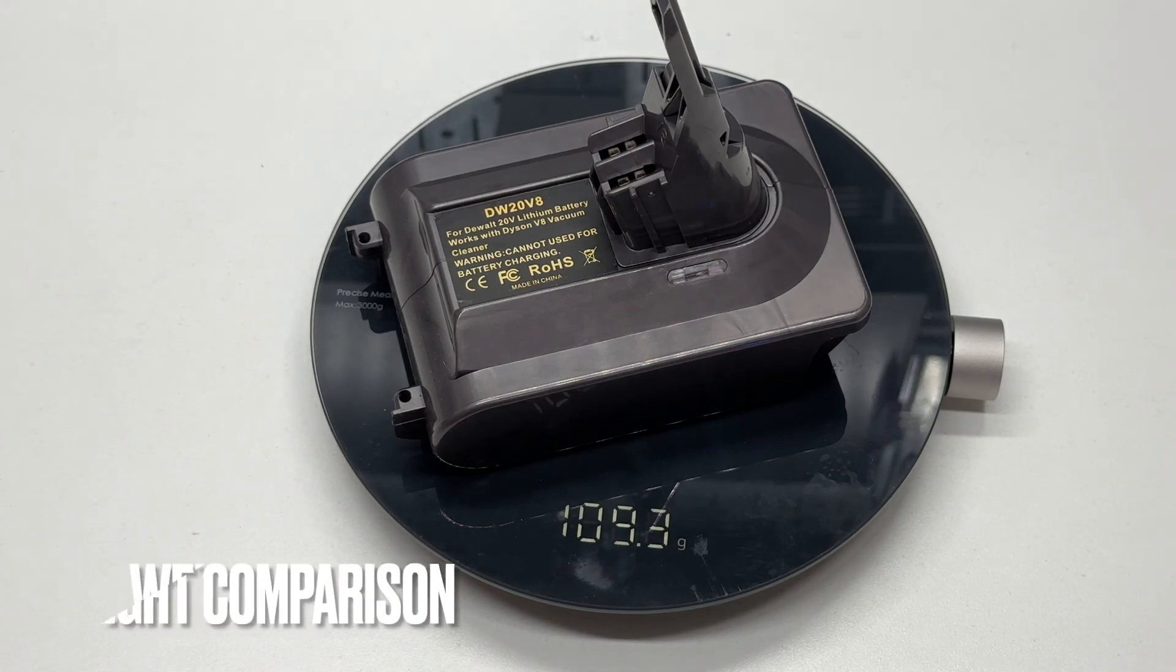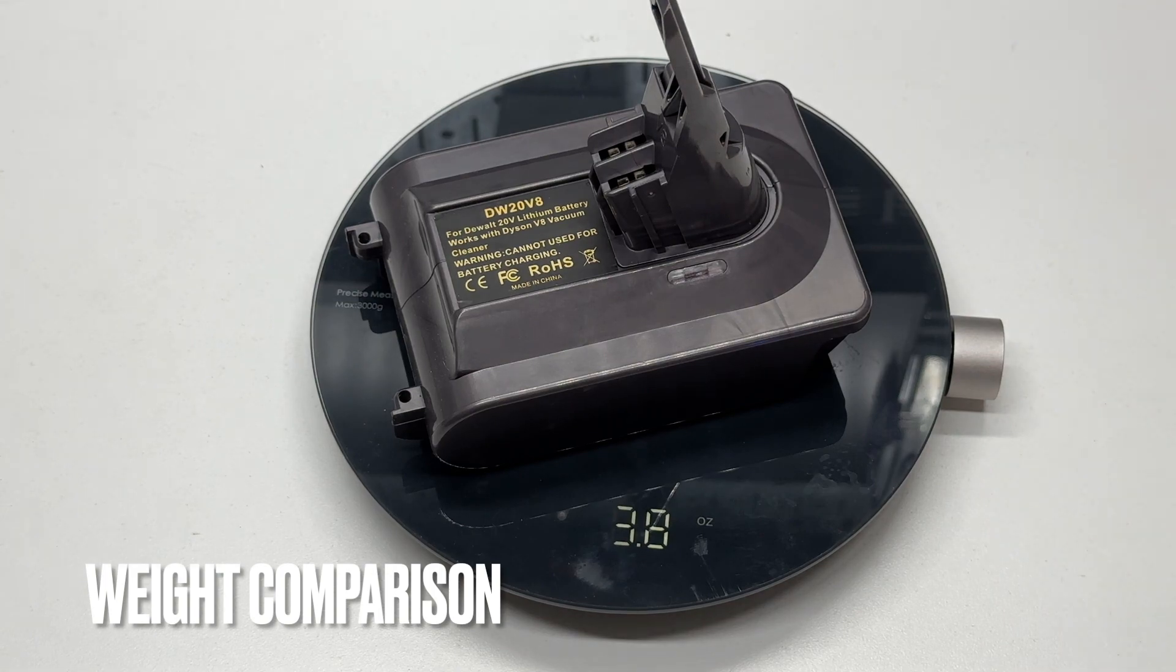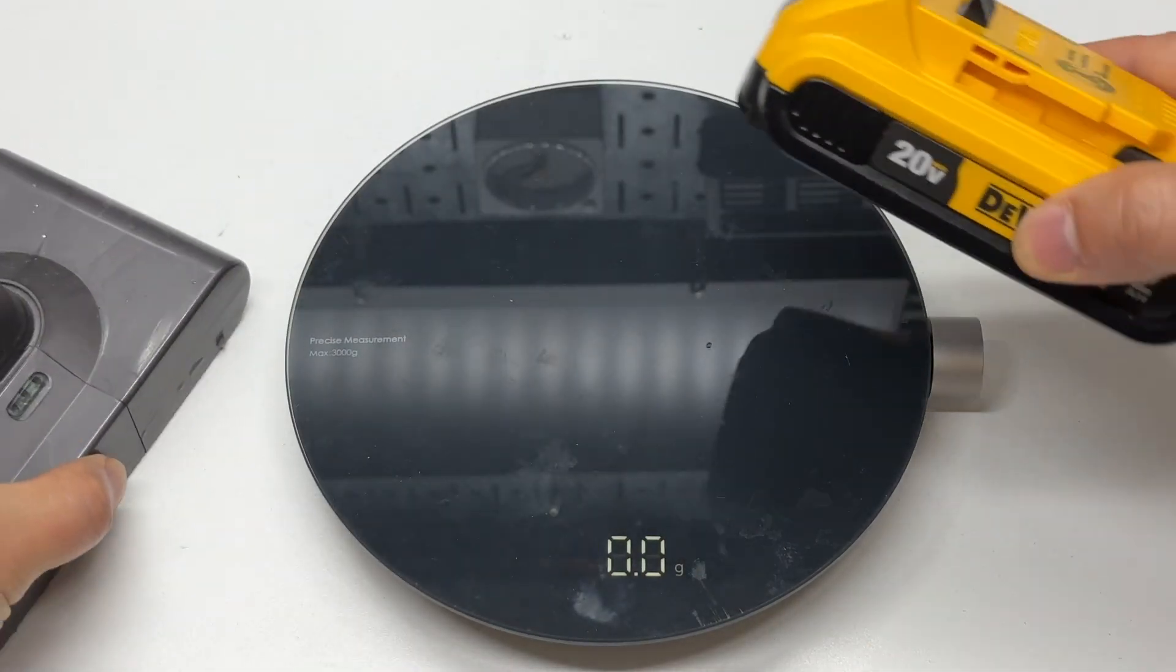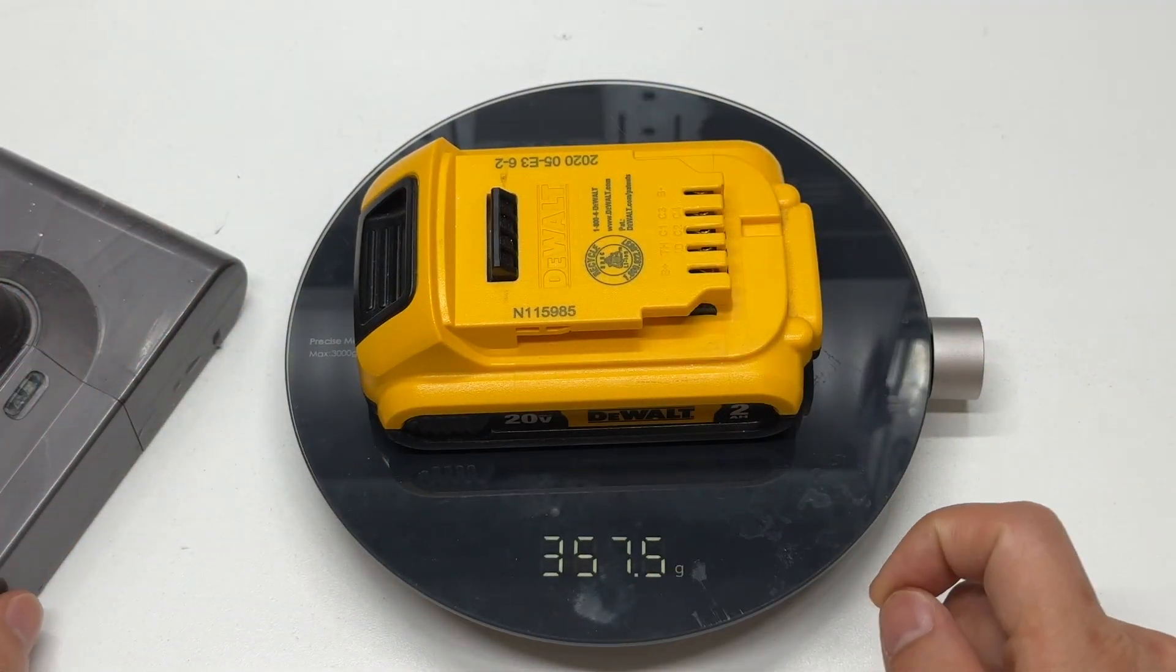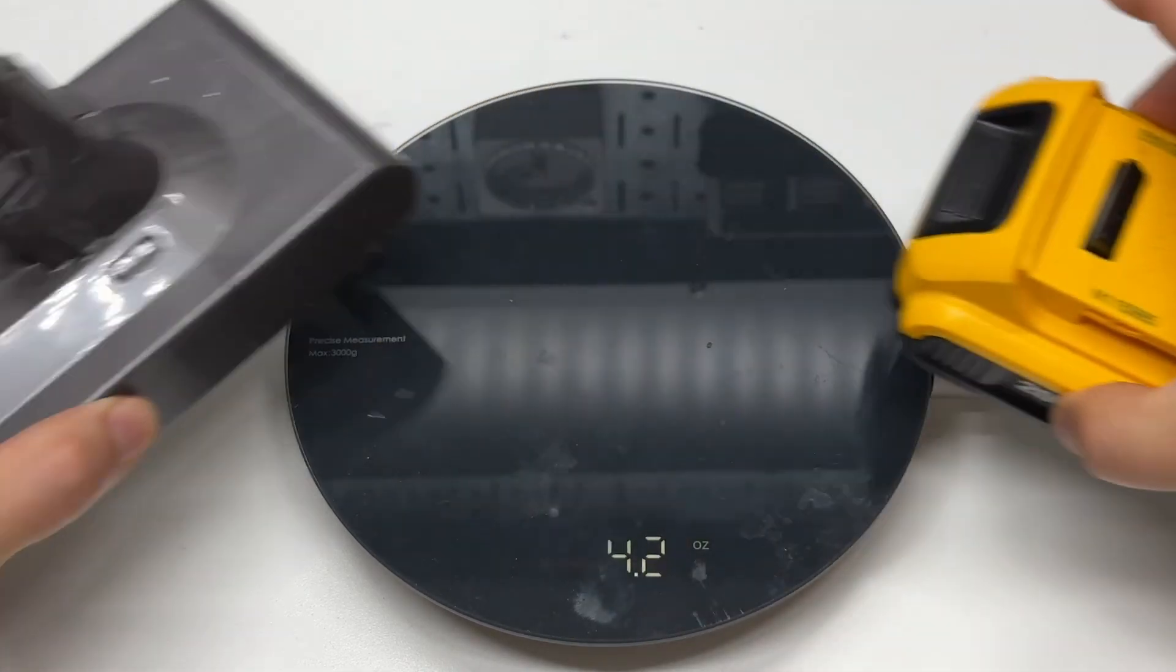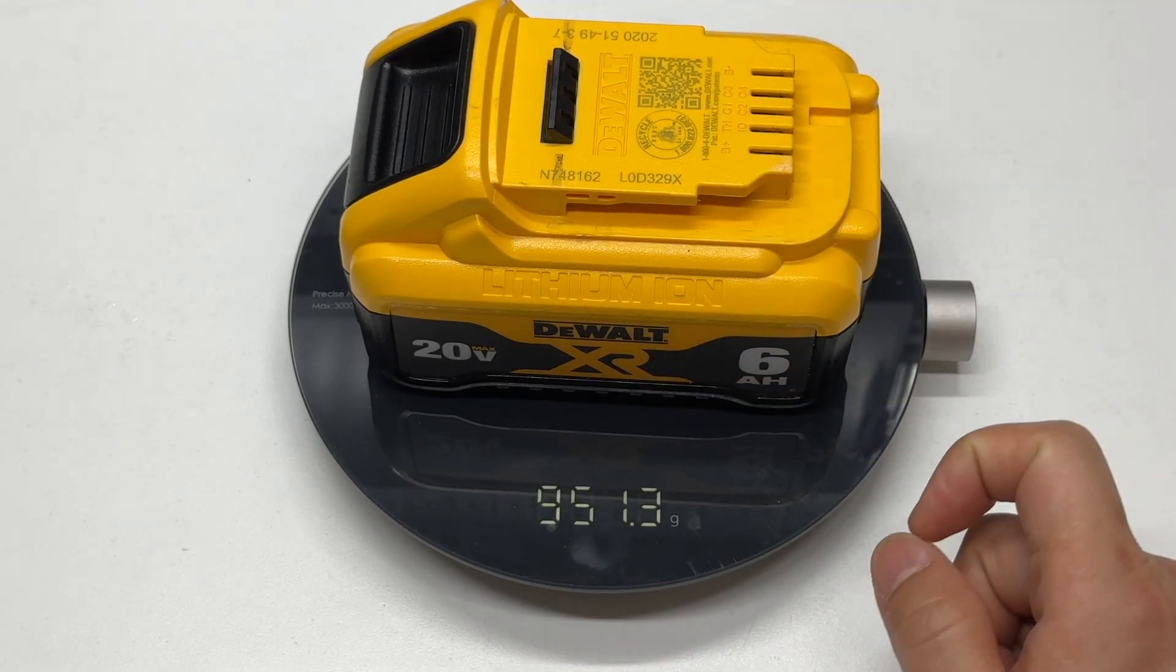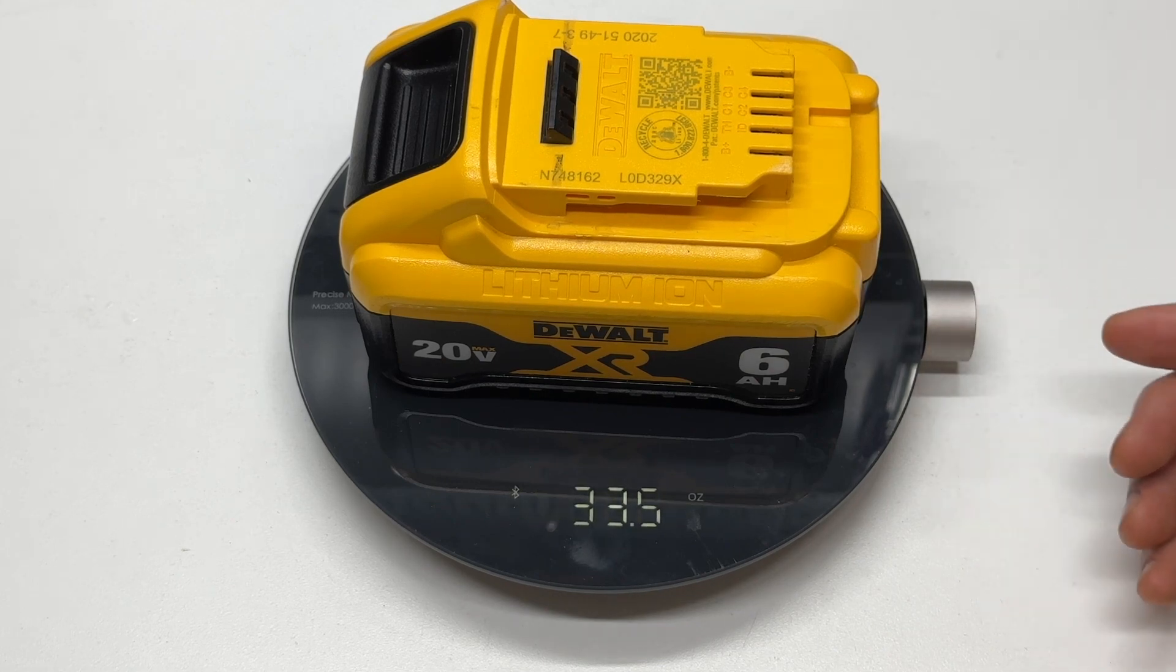The adapter is 109.4 grams or 3.8 ounces. Dyson original battery pack weighs 532.7 grams. The DeWalt 2A weighs 357.5 grams or 12.6 ounces, 18.8 ounces total. The 6A battery is 951.3 grams or 33.5 ounces.